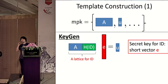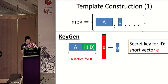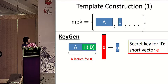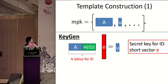Now for the lattice section. The template construction for lattice-based IBEs has basically one line of thought. For the master public key, we have a matrix A and a vector U, plus some auxiliary information. For key generation, we hash the ID to a particular unique lattice for that ID, creating A concatenated with hash(ID). We sample a short vector E such that [A | H(ID)] · E = U. We can do this using the master secret key, which is the trapdoor for matrix A — without it, we can't sample this short vector E, which is our secret key.